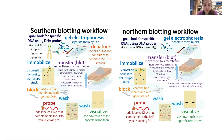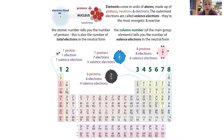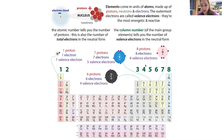Now that I've convinced you that radioactivity is super useful, what is it? To answer this question, we need to go back to the very basics of what elements and atoms are. Each element is defined by the number of protons it has. Carbon has six protons, nitrogen has seven, oxygen has eight, hydrogen has one, and phosphorus — which we'll be talking about more today — has 15, as you would see on the periodic table.